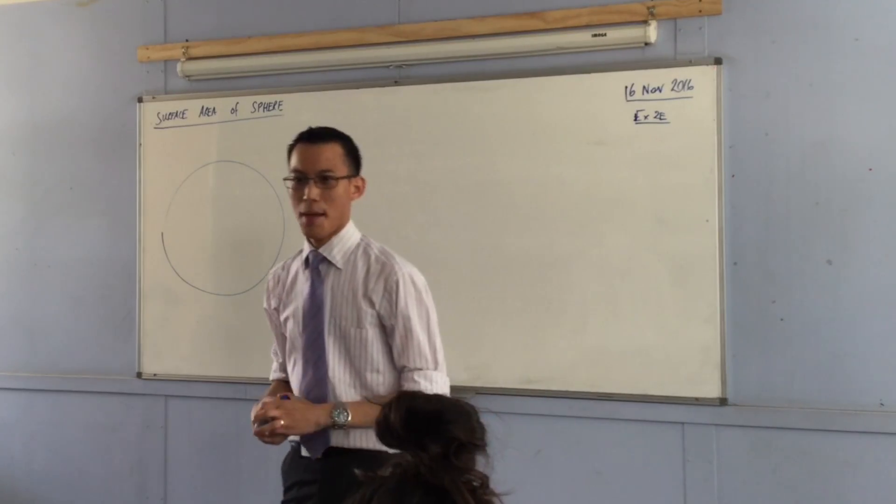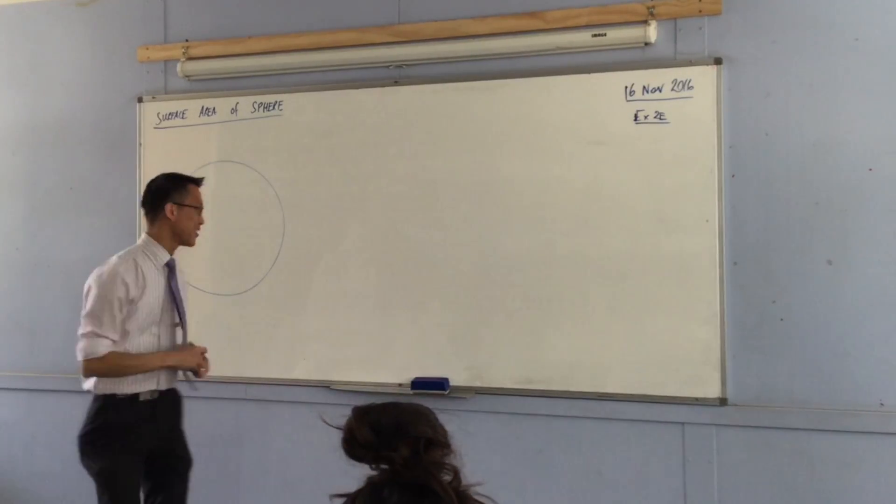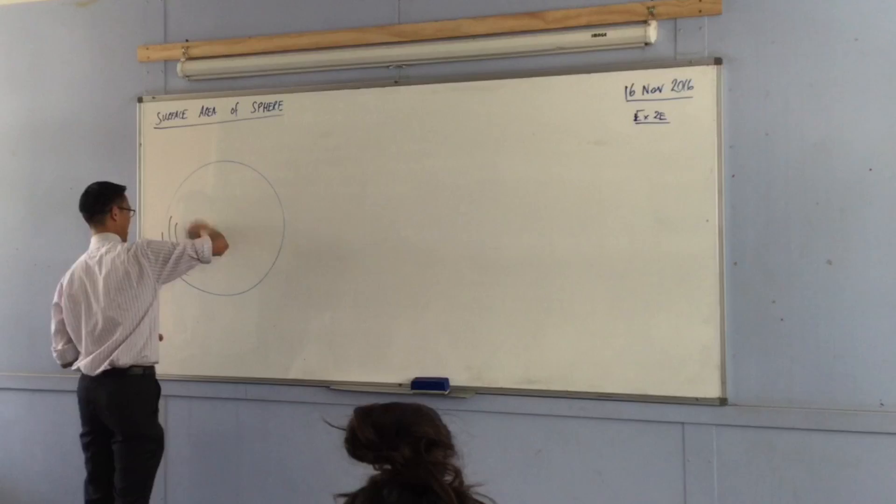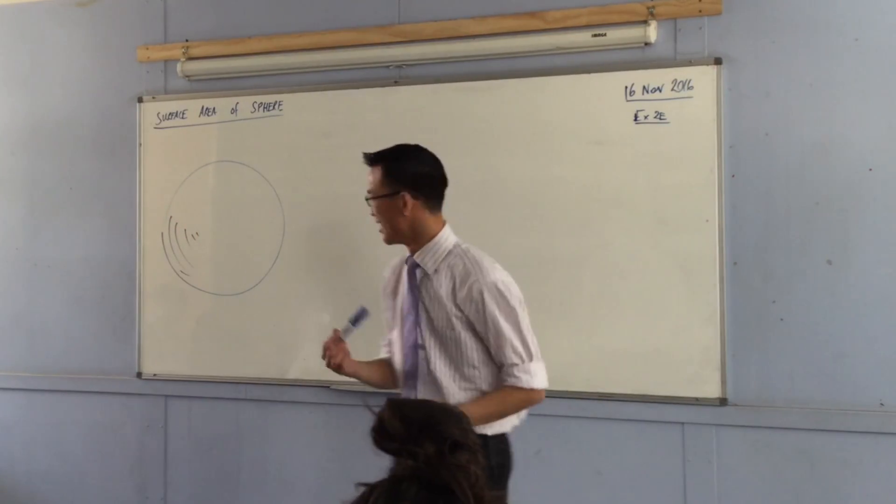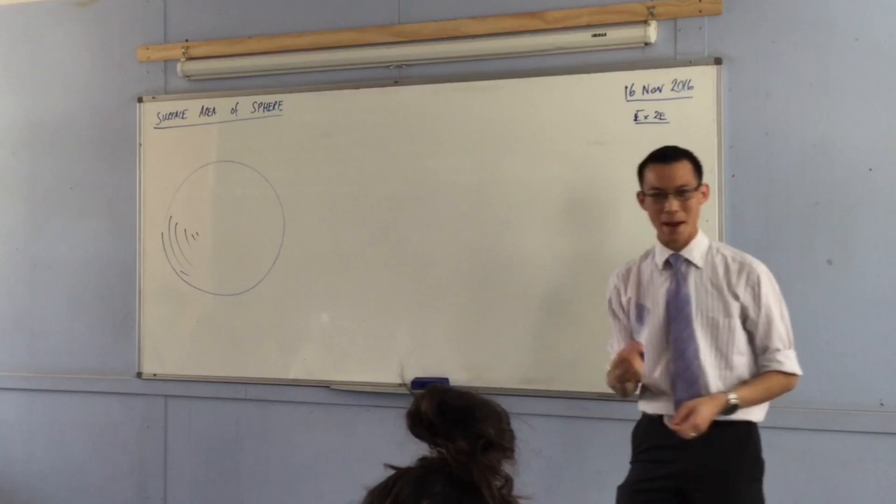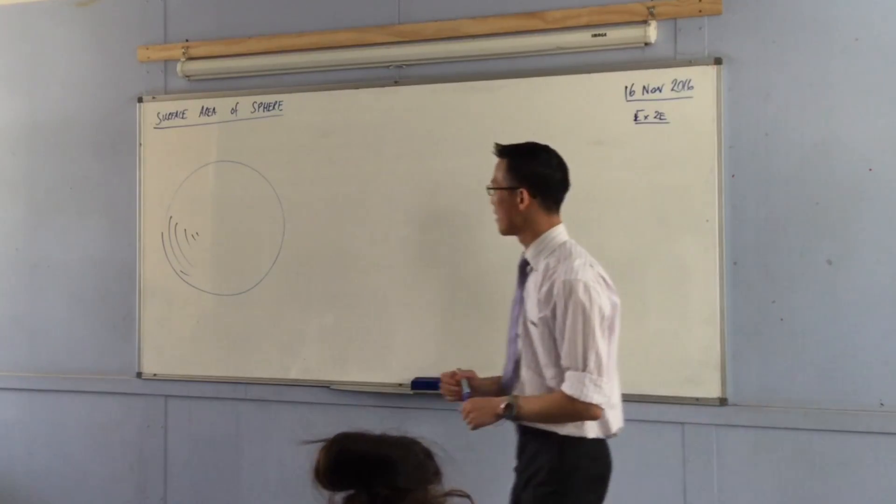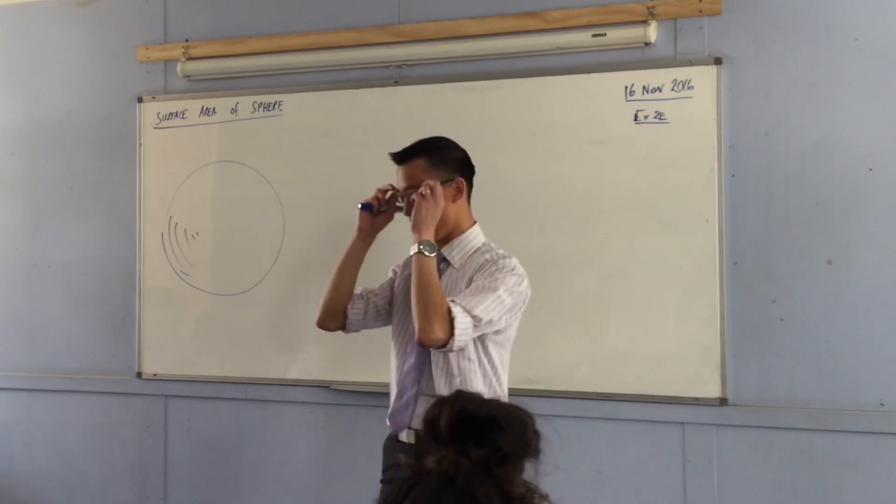This is a circle at the moment, but I'm about to make it into a sphere. Ta-da! It's a sphere! I can do this a lot better with a pencil than with a whiteboard marker, but you get the idea. It depends on where the light is. Exactly, it's all done.